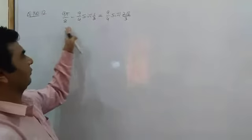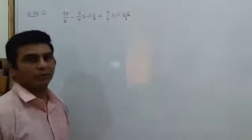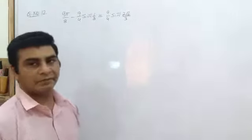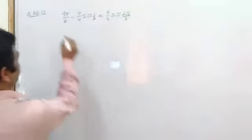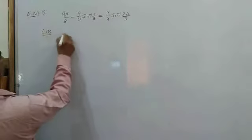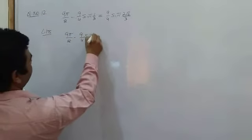Question number 12 in which we are going to prove that 95/8 minus 9/4 sin inverse 1/3 will be equal to 9/4 sin inverse 2 root 2 by 3. So let's take the left hand side of this question. This is given as 95/8 minus 9/4 sin inverse 1/3.